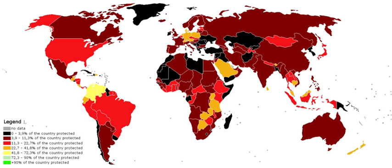Protected areas are essential for biodiversity conservation, often providing habitat and protection from hunting for threatened and endangered species. Protection helps maintain ecological processes that cannot survive in most intensely managed landscapes and seascapes.